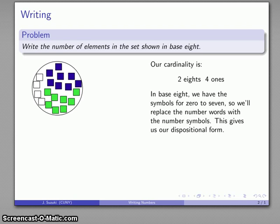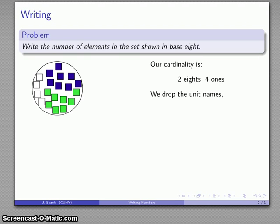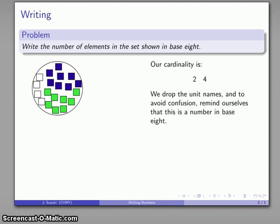Our final transition to a purely symbolic form is to drop the unit names and to remind ourselves that we are actually working in base eight, we like to spell out the base down below as a subscript. So our cardinality here would be 24 base eight, and it's very important to read this as 'two four base eight.'